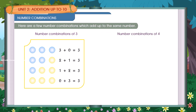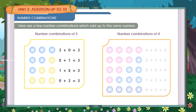Number combinations of 4: 4 plus 0 is equal to 4; 3 plus 1 is equal to 4; 2 plus 2 is equal to 4; 1 plus 3 is equal to 4; 0 plus 4 is equal to 4.